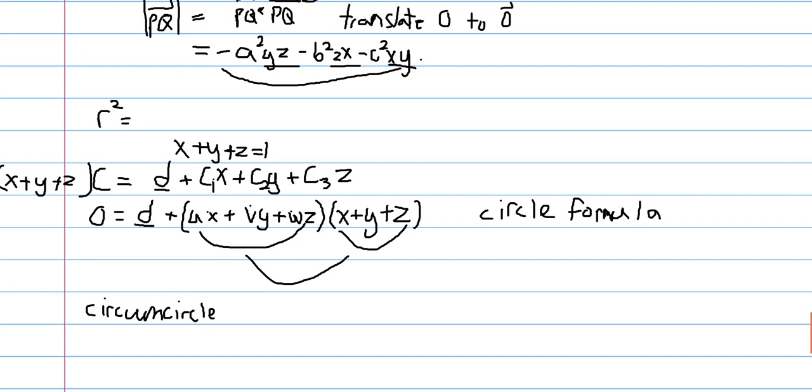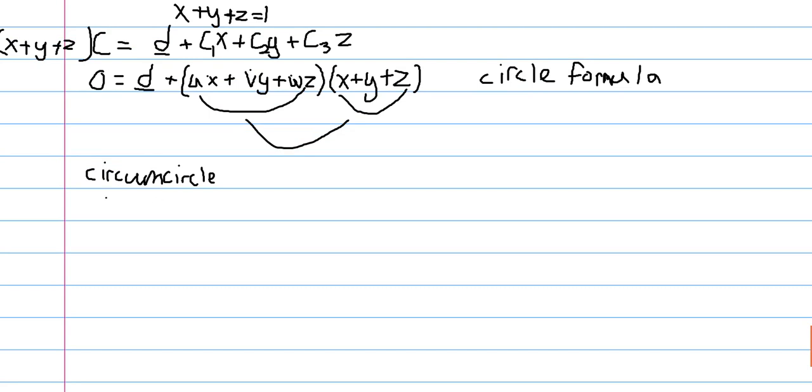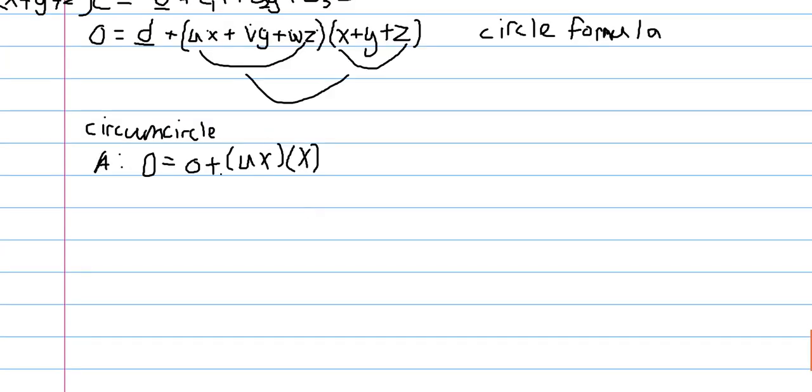Now, notice that D, this underline D, if we were to plug in any one of the vertices of the triangle into this equation, we have two things that are 0. And each of these terms contains at least one of these 0s, so the whole thing is 0. So, when we plug in A, for example, this D is just 0. So, we have 0 equals 0 plus, similarly, these Y, Z terms, Y and Z terms, will go to 0. And we're left with U, X, times X. And this just implies that U equals 0.